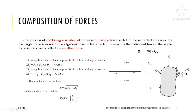After adding all components, you obtain a single horizontal component and a single vertical component. The formula to find the resultant is: R = √(ΣFx² + ΣFy²). To find the angle theta of the resultant: theta = tan⁻¹(ΣFy / ΣFx).